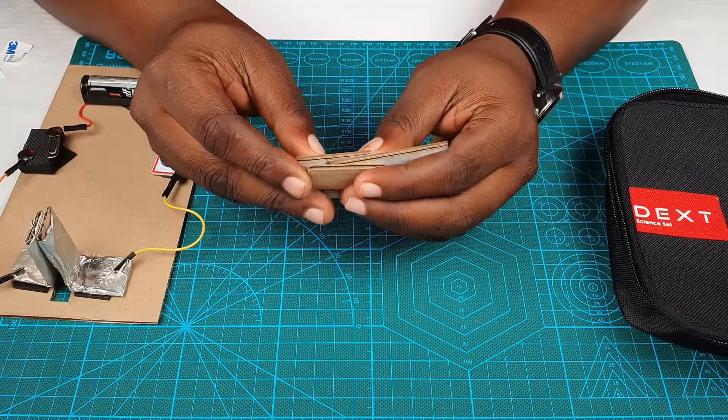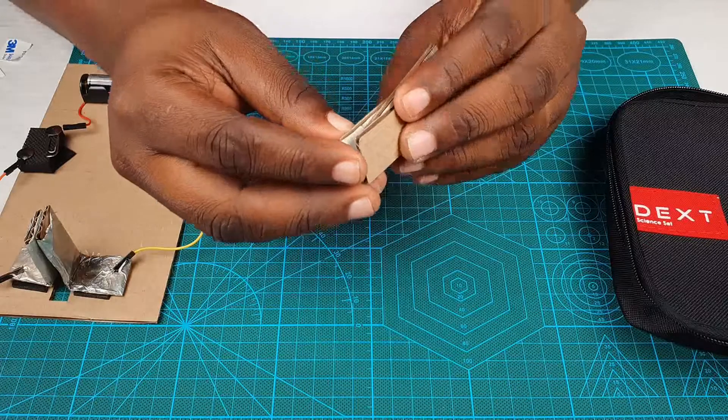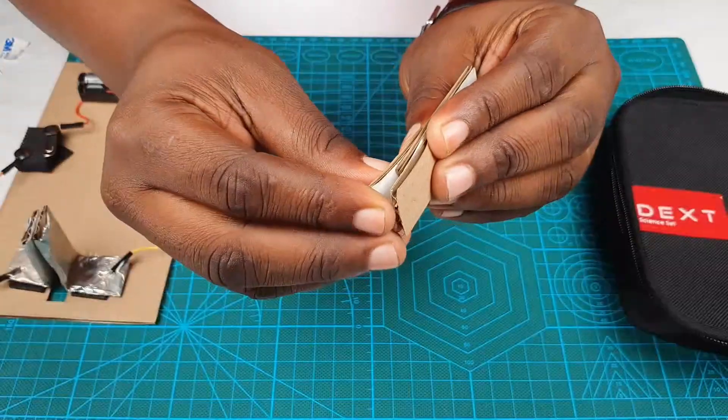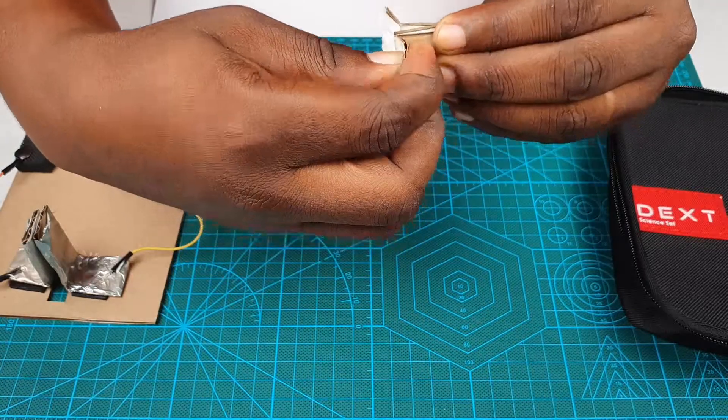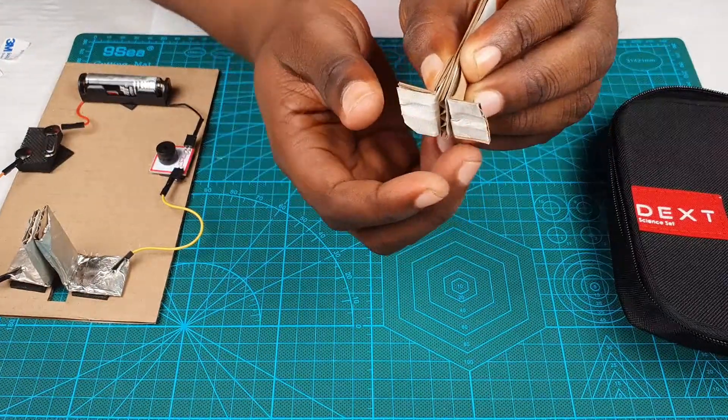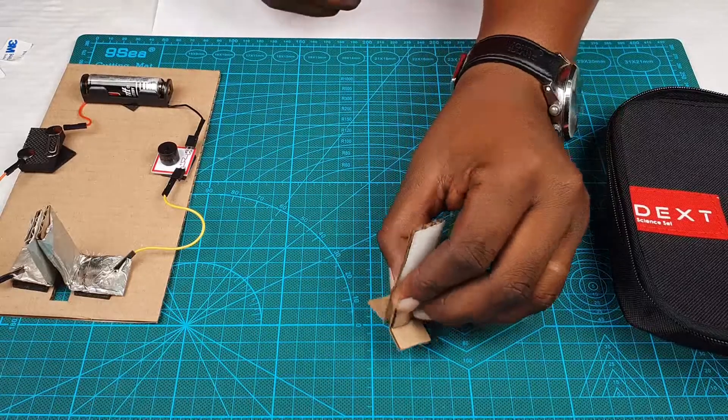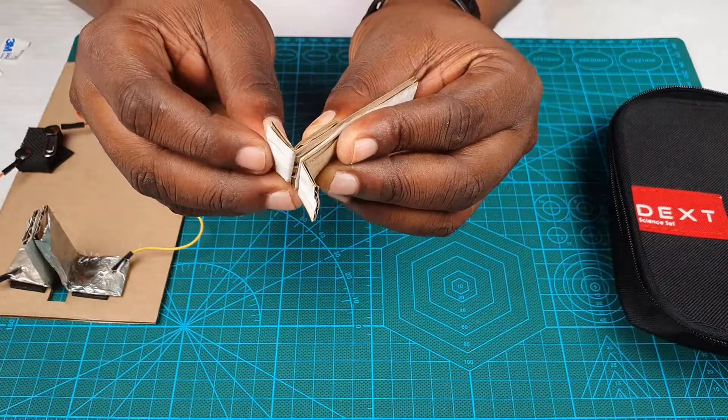This is how we build that part. We attach these two smaller strips in this fashion and bend them this way. And this is the part that we are going to attach to the fixed part of the door.